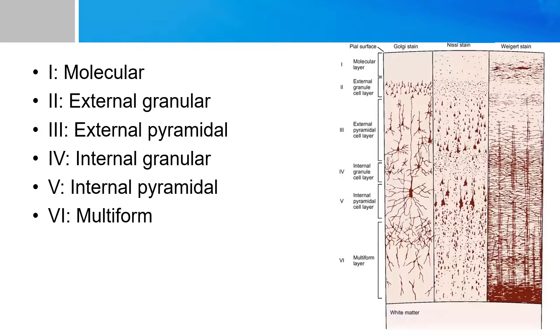And the external layers are more related to communications with other parts of the cortex. The internal layers are responsible for input and output to the outside world, such as your spinal cord, your peripheral nerve system, or your thalamus, etc.